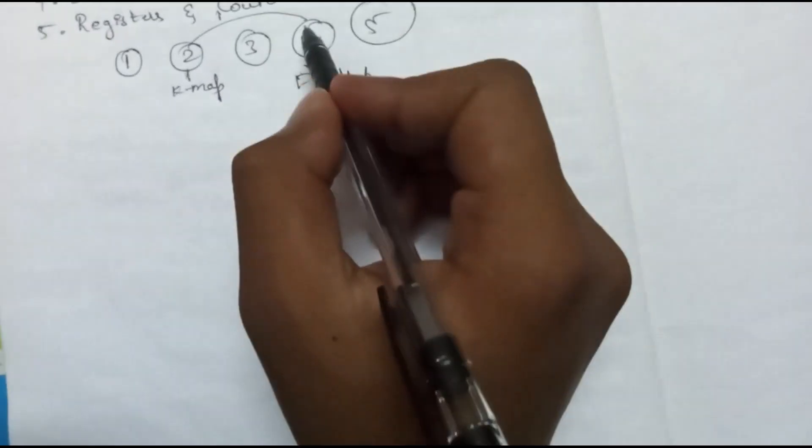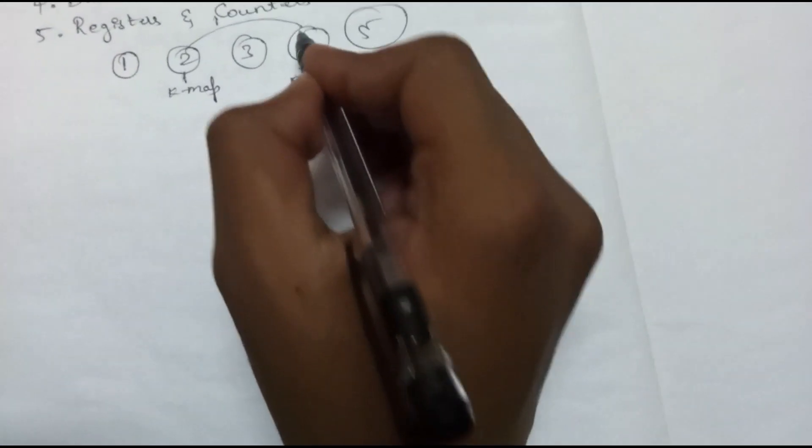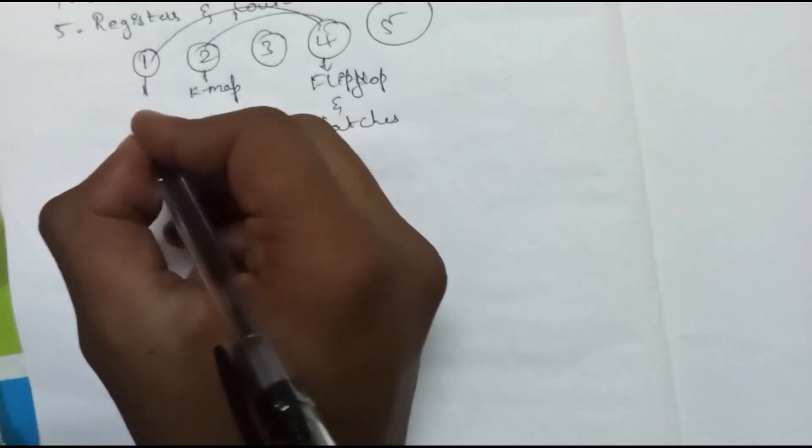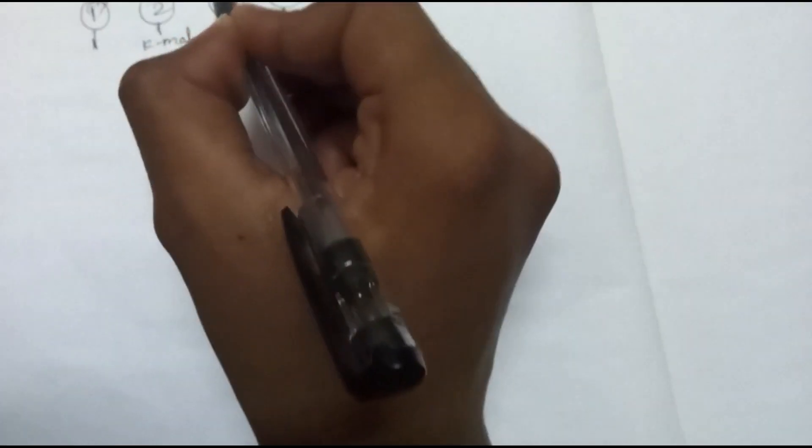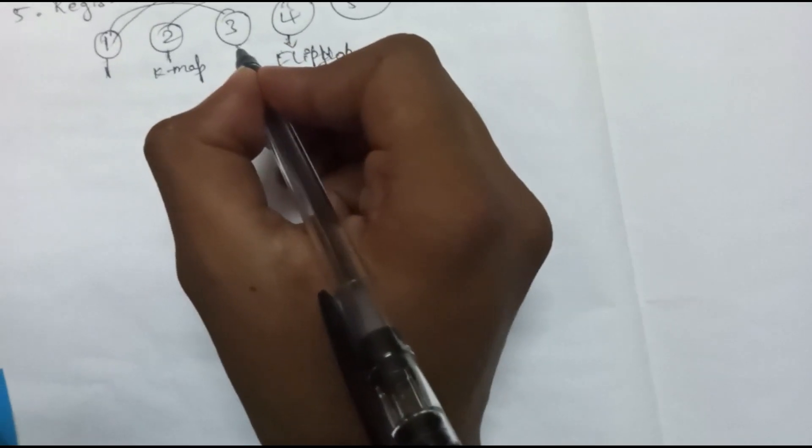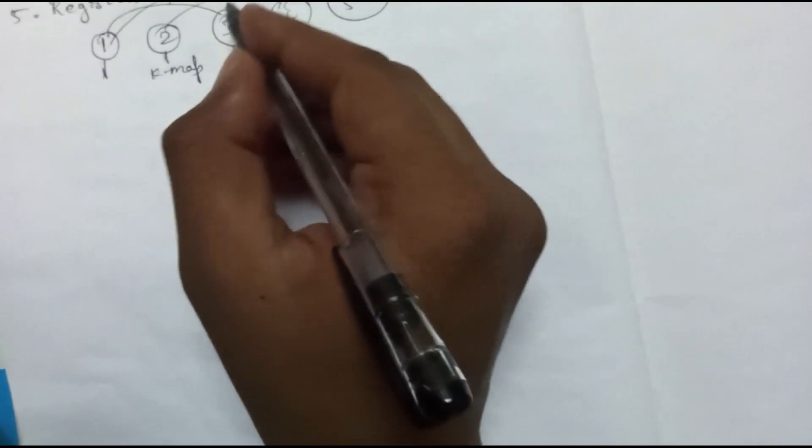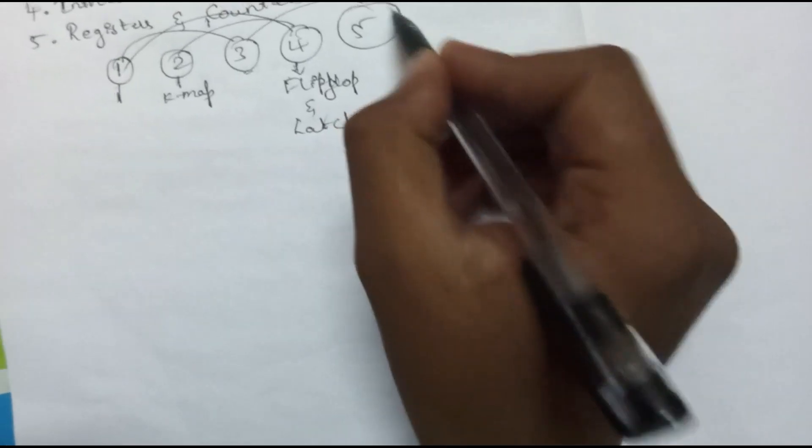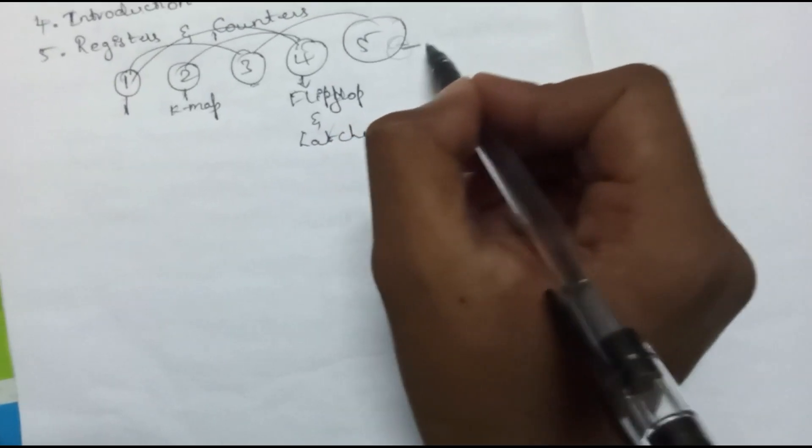Then go to first module - it's a bit tough but easy to study. Then go to third module which has 8-to-1 mux, 4-to-1 mux, 16-to-1 mux, decoders, and PLA. Then go to fifth module registers and counters. If you study flip-flops and latches, registers and counters will be very easy. Now we'll start with second module, K-map.